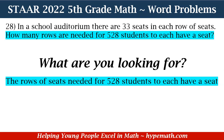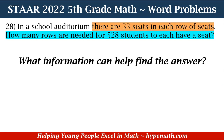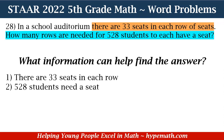Now that we know what we're looking for, our next question is: what information can help us find the answer? The information that can help us is, number one, there are 33 seats in each row, and number two, there are 528 students needing a seat. Now that we know that, how do we solve the problem?